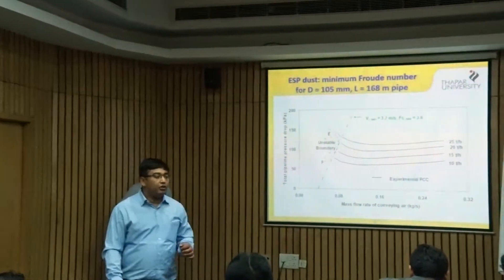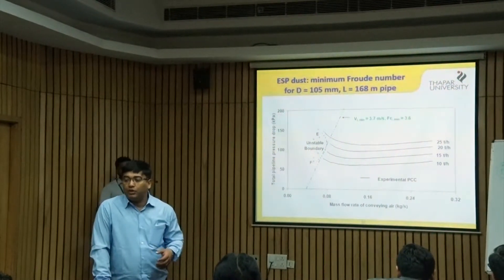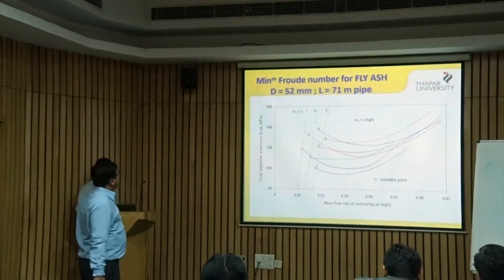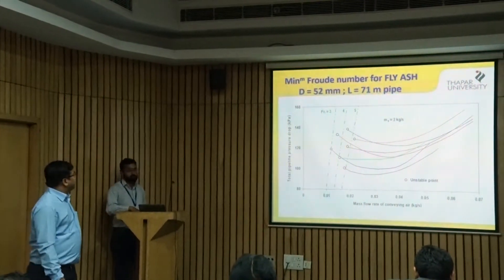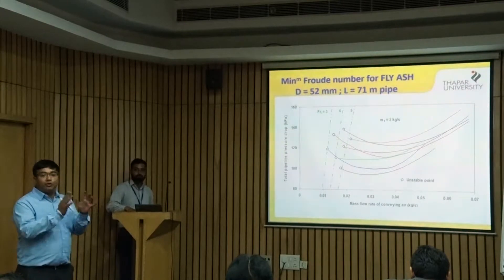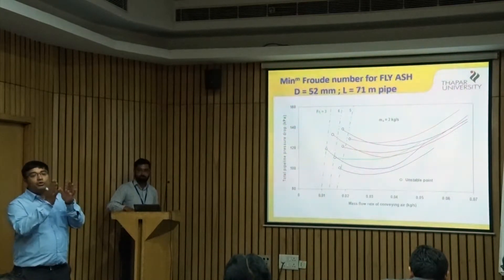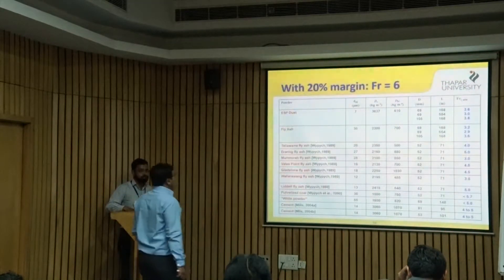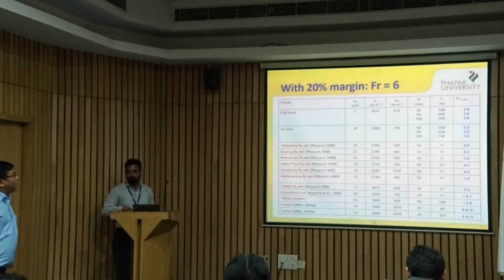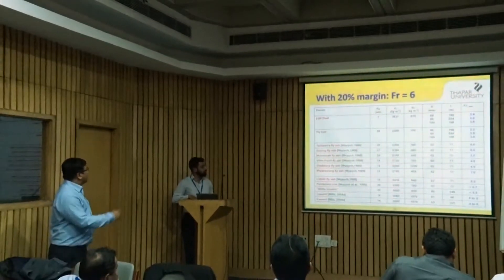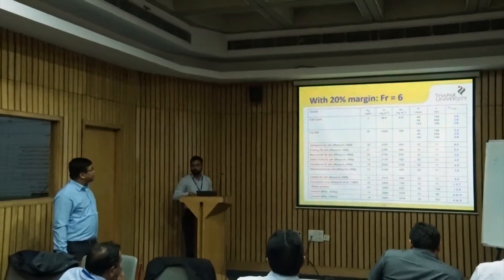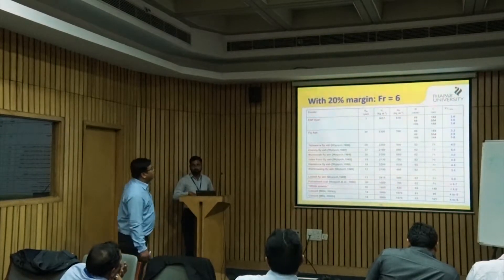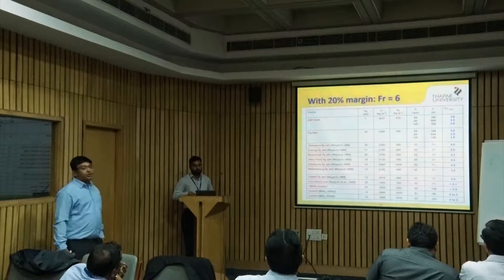We modeled the blockage boundary for various products — these are all different fly ash samples conveyed through various pipelines, about 10 to 12 fly ash samples conveyed through different pipelines. We found that if you deal with Froude number instead of velocity, you get a smaller range.